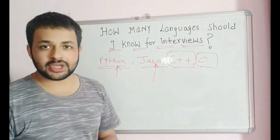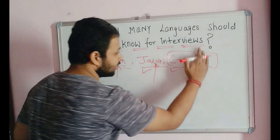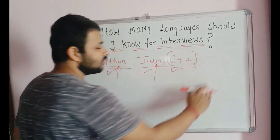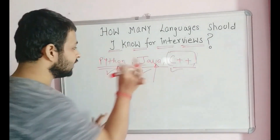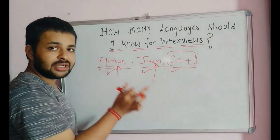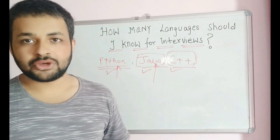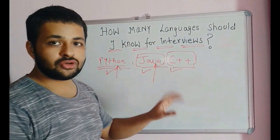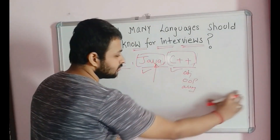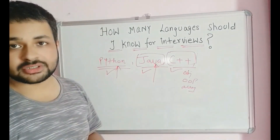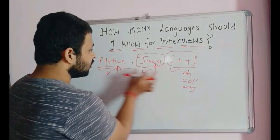In general, for interviews you should know any one object-oriented programming language — either Python, Java, or C++. If you're from CS/IT or any coding background, C should already be known to you — that's a basic foundation. You don't need to neglect the others; know the basics of all languages but be a master of one. For example, if you know C++ very well — objects, OOP concepts, arrays — the concept is the same in all languages, only the syntax differs.